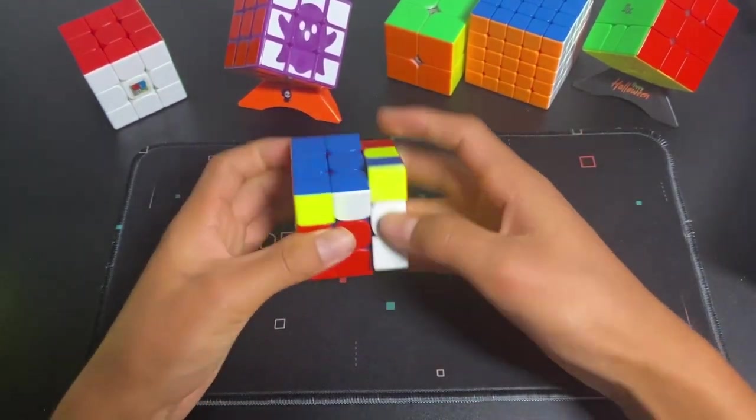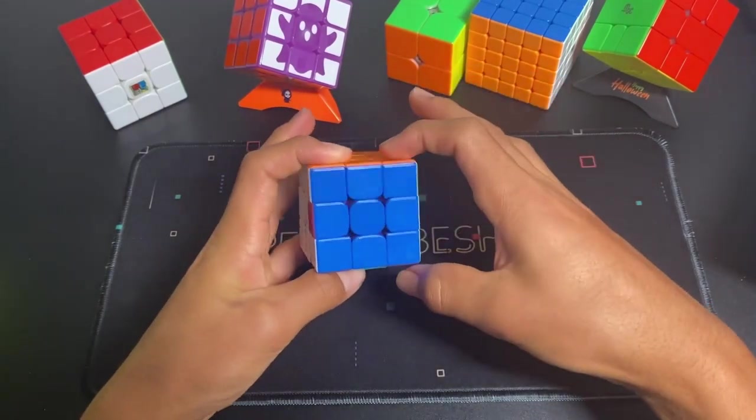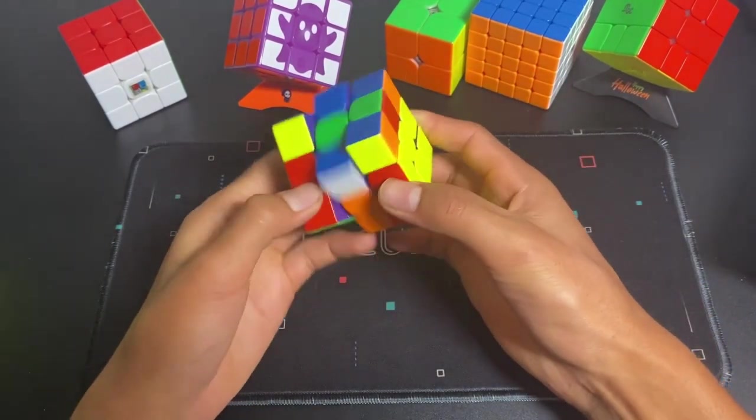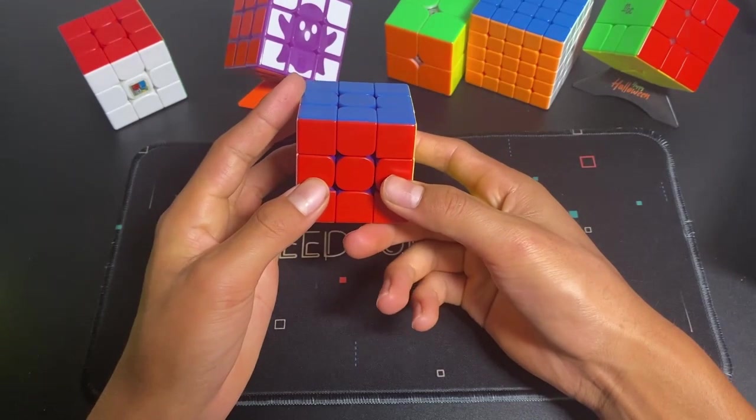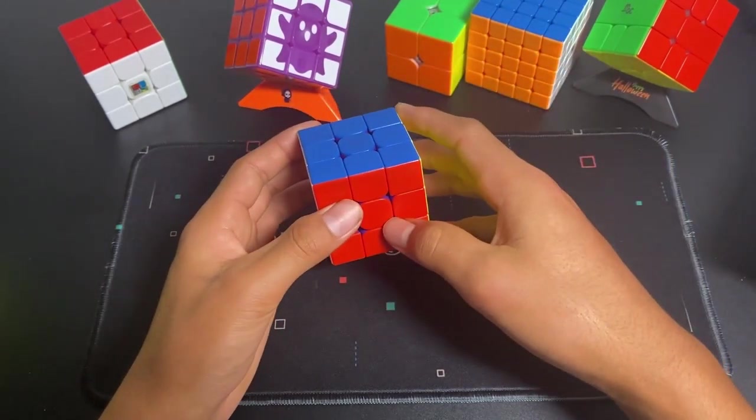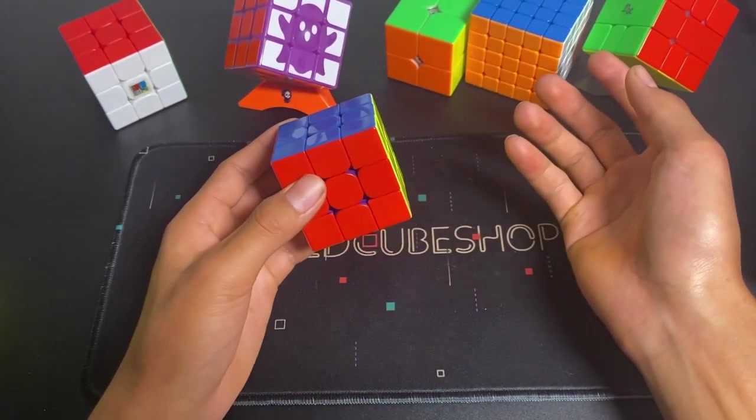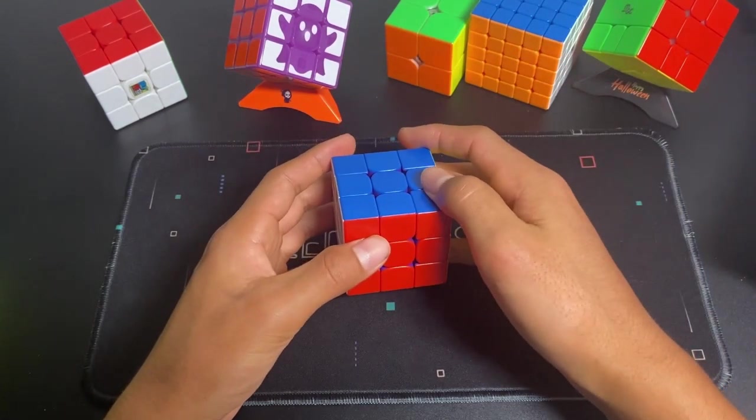and then you do one more algorithm to orient all the edges. And this is called two-look PLL because you look two times, I guess, and you use two algorithms.